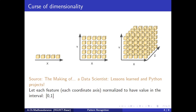Let's have a look at the Curse of Dimensionality. When we have one feature, two features, or three features, and we try to use the histogram method to find the probability density functions for the likelihood functions — for example, dividing the 0 to 1 interval into 5 parts (0 to 0.2, 0.2 to 0.4, 0.4 to 0.6, 0.6 to 0.8, 0.8 to 1) — we need to estimate 5 parameters when d equals 1.